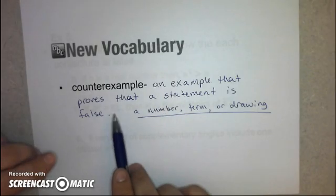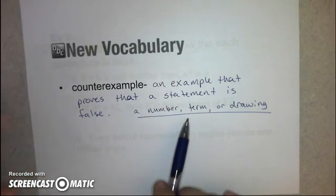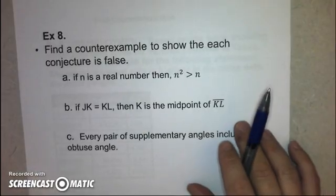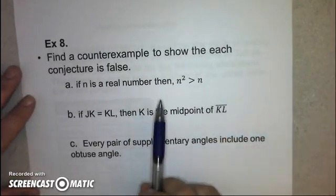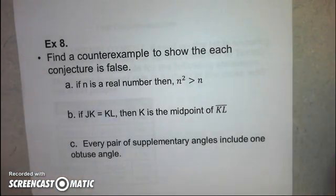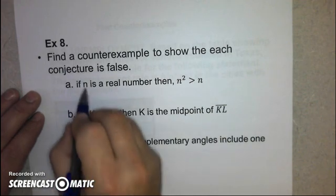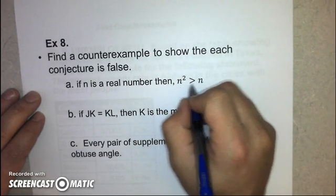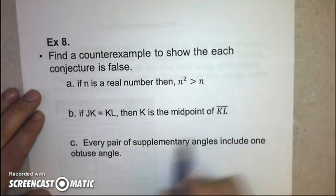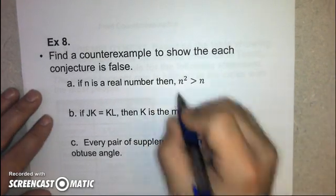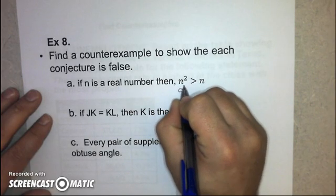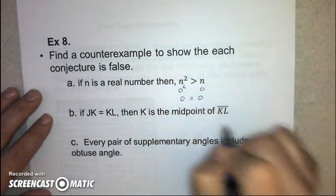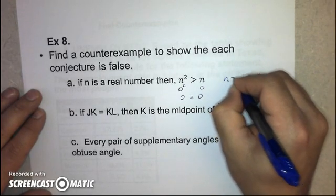It could be a number, it could be a term, it could be a drawing that shows that a statement is actually false. So we're going to look at how to come up with counterexamples in this next example. Example 8. We want to find a counterexample to show that each of these statements is false. Here's our statement in part A: If n is a real number, then n squared is greater than n. We need a value of n that would make this actually false. At first glance, it seems that this is going to always be true unless you remember that values like 0 squared is just 0. In that case, your answer is not greater than 0. It is equal to 0. So our counterexample is n equals 0.